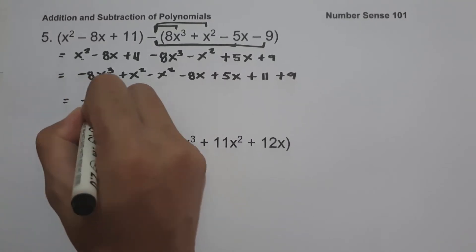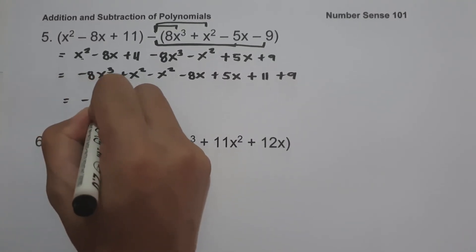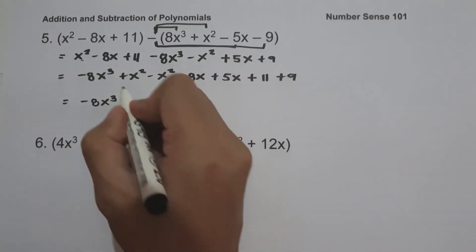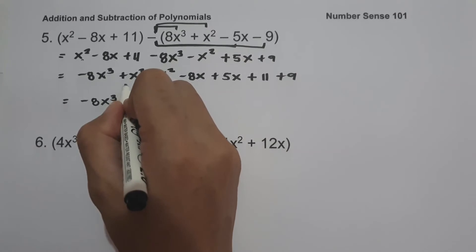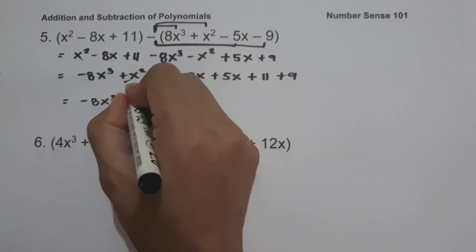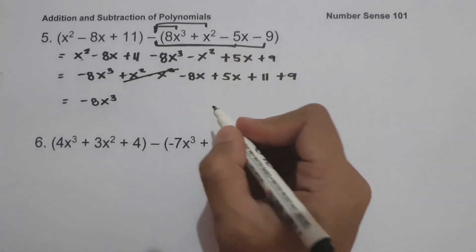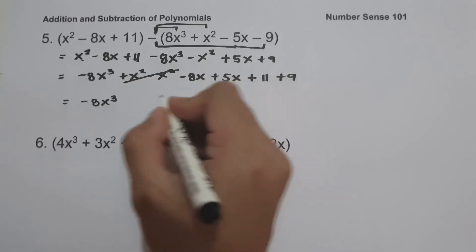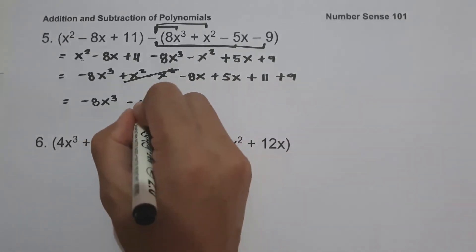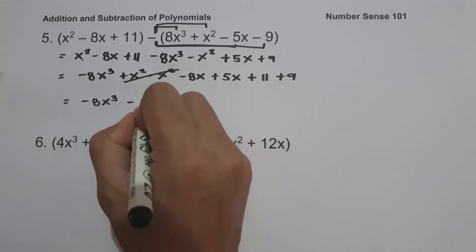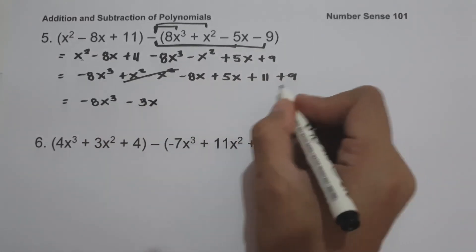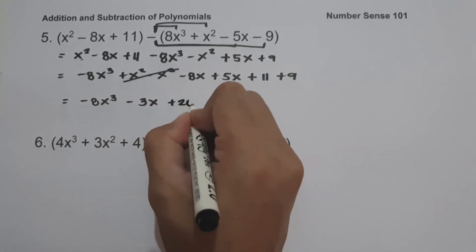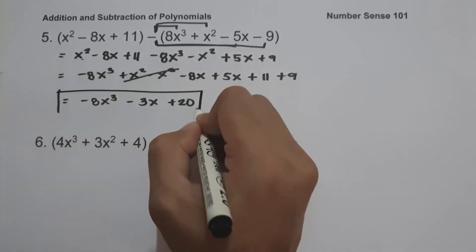We have negative 8x cubed, then x squared minus x squared cancels out, negative 8x plus 5x is negative 3x, and 11 plus 9 is 20. And this will be our answer.